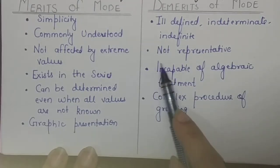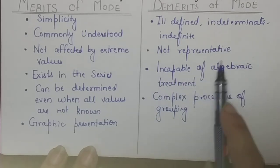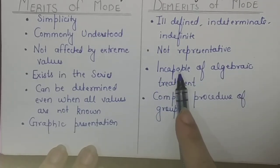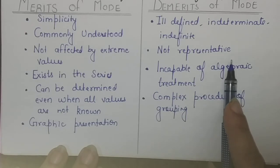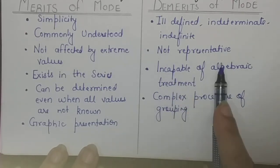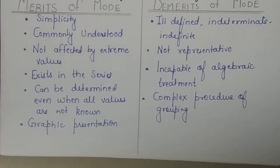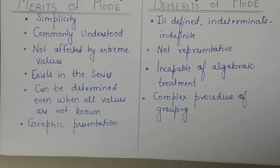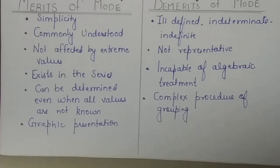Mode is not representative of all observations. For example, in employee income data, if lower-level employees are the most numerous, the mode will reflect their income — but that is not representative of all employees. So mode can be misleading when the data is skewed or unevenly distributed.